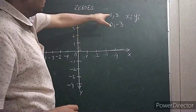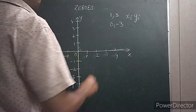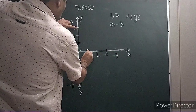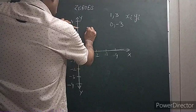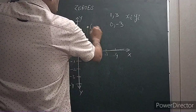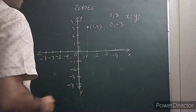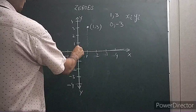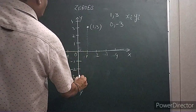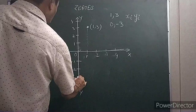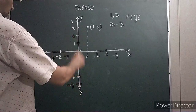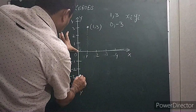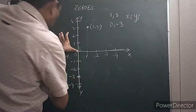Let's plot the first value: x is equal to 1 and y is equal to 3. This is the first point — (1, 3). For the second point, x is equal to 0 and y is equal to minus 3. This is the second point — (0, minus 3).